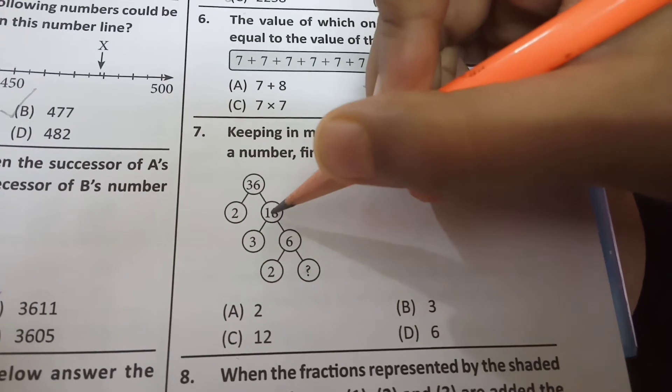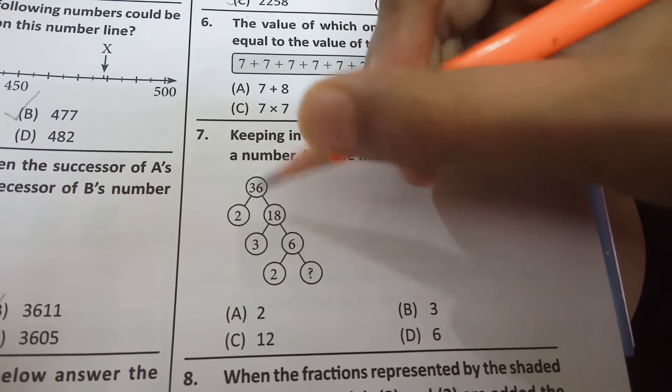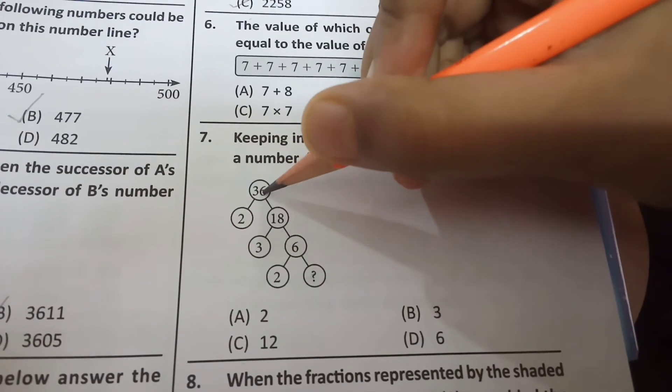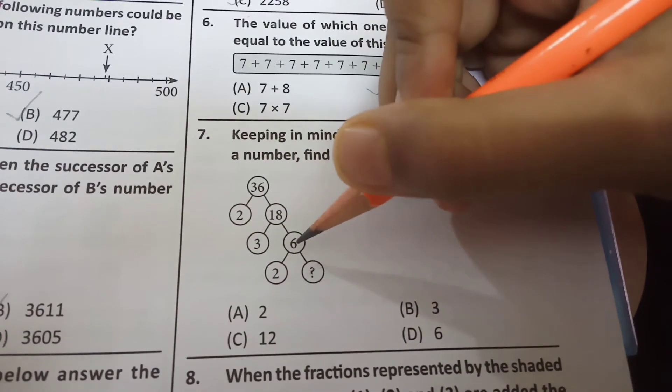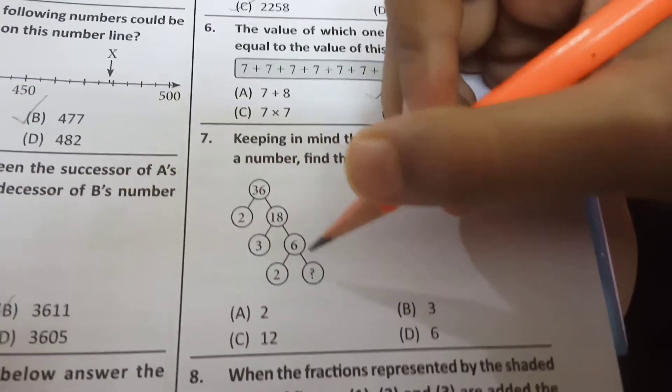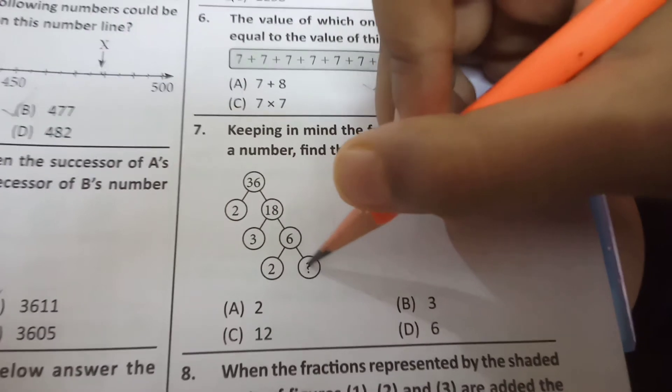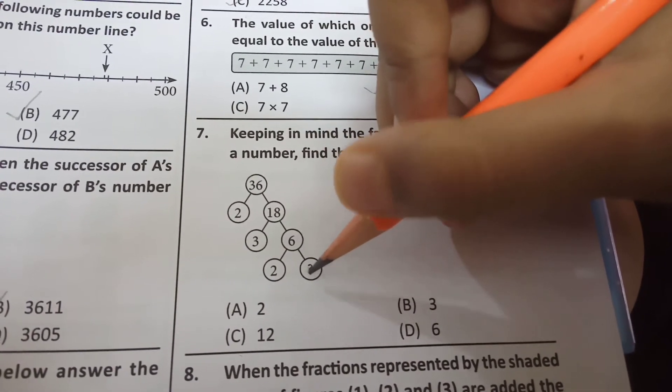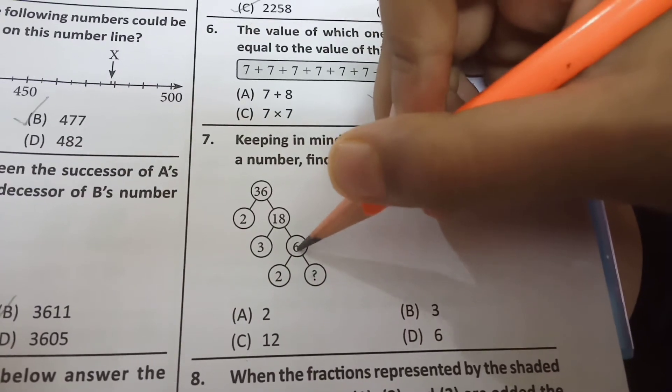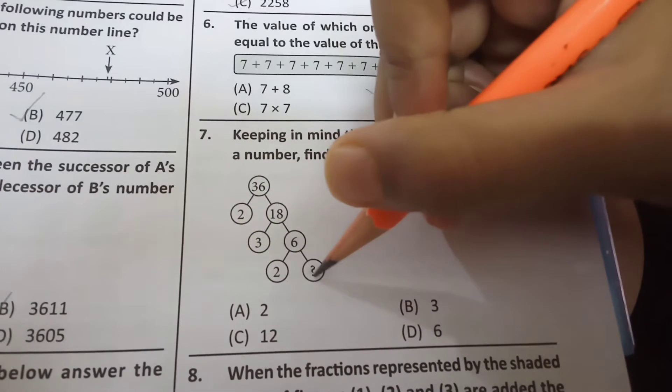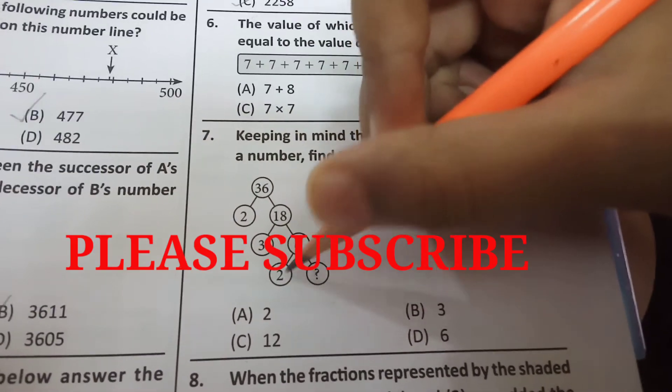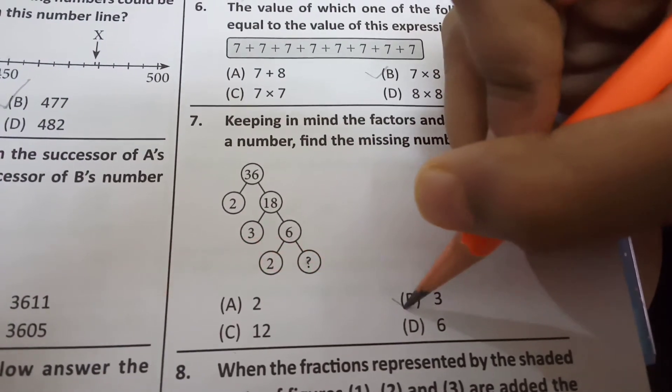Look here, 18 is a factor of 36 and 18 multiplied by 2 is 36. See, 6 is a factor of 18 and 6 multiplied by 3 is 18. So what will be here? What is a factor of 6 and is a number that will multiply with this and the answer will be this? It will be 3. 3 is a factor of 6 and 3 multiplied by 2 is 6. So 3 will be the answer.